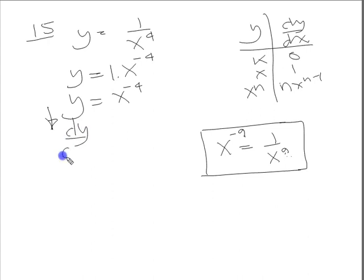So we can write dy dx is equal to power. Here's the power rule. The minus 4 comes down to ground level, x to the 1 less than minus 4, which is minus 5.